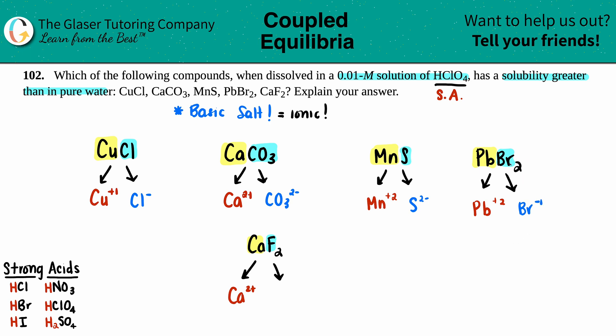Now remember, we're dissolving it in something that's acidic, so we're looking for that basic salt. The basic salt is going to come from the negative charge. In all of these, I don't care about the positives. The base is going to come from that negative anion.